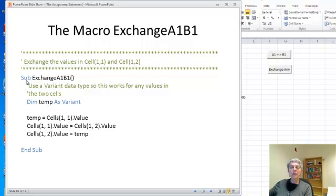My subroutine is called sub. That's a keyword that says I'm writing a macro. And I'm calling it exchange A1B1. It has open parentheses because that's a place where if I were using parameters, I would put them. We'll learn about parameters later.